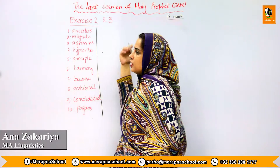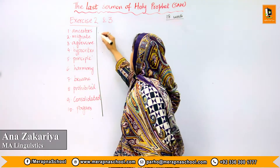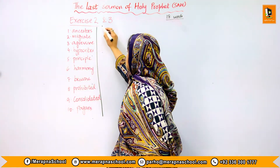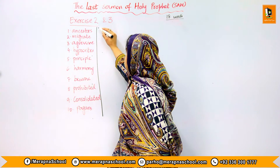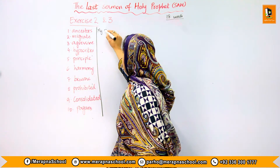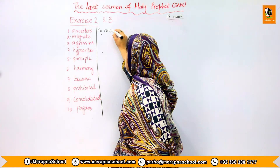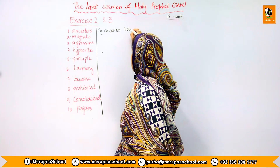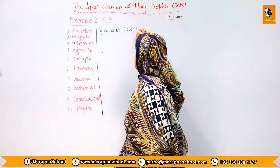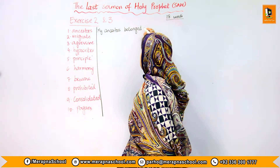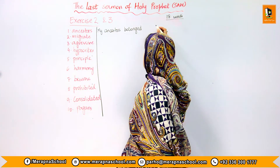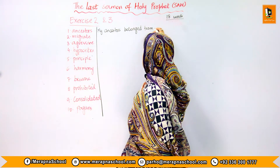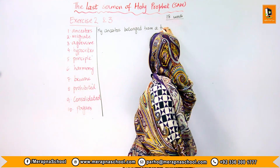The first word is 'ancestors.' Ancestors means your forefather. So let's make a sentence: 'My ancestors belonged to a tribal area.'